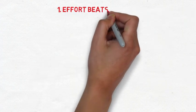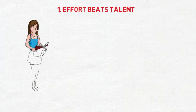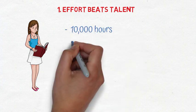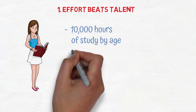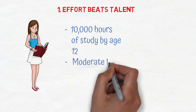First is that effort beats talent. The Polgar Sisters experiment lends credence to the theory that effort is more important than talent. Each of the three sisters was estimated to have studied and practiced over 10,000 hours of chess by the young age of 12.